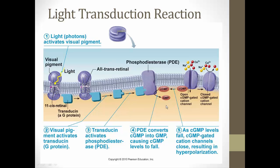Cyclic GMP's job is to attach to sodium channels and allow sodium to flow in. With sodium concentrated outside, when the channel is open, sodium moves in causing depolarization. But when light hits and we lose cyclic GMP, those channels close. If the channel closes, sodium can't enter, and the cell becomes hyperpolarized.